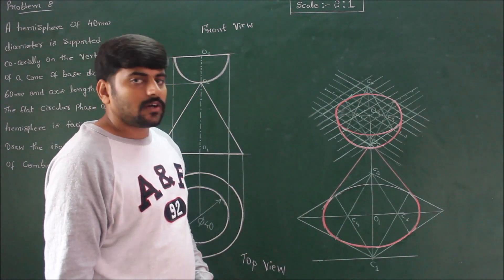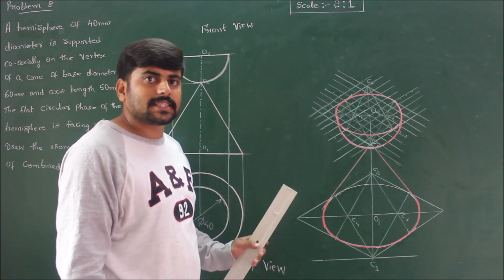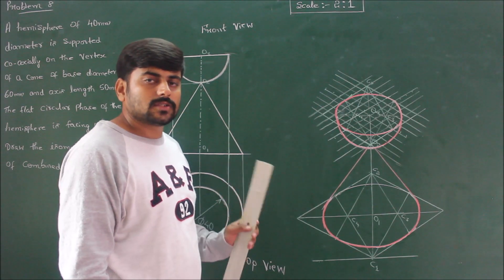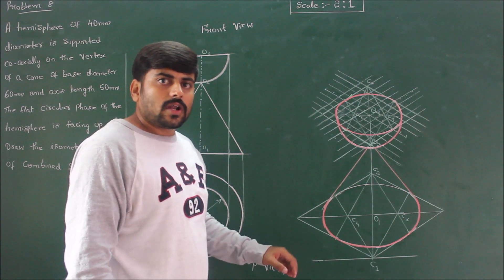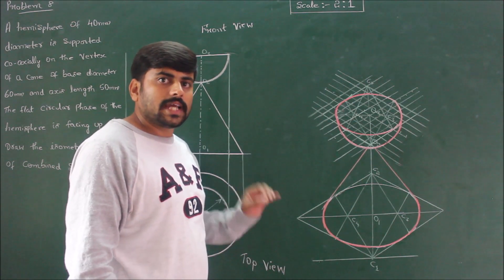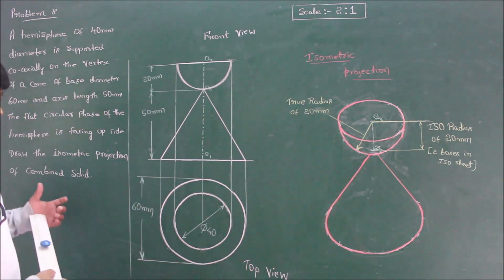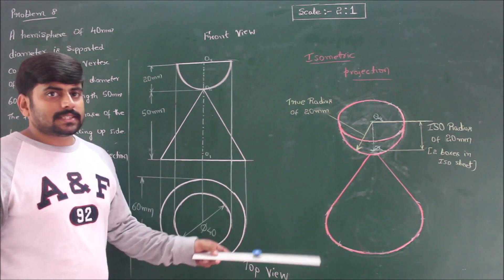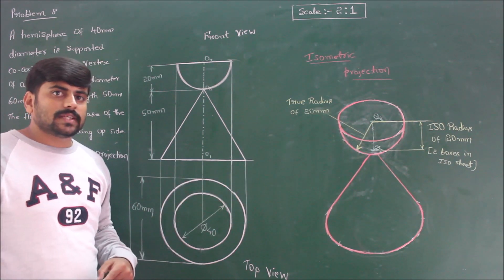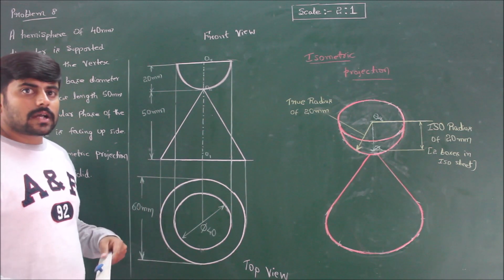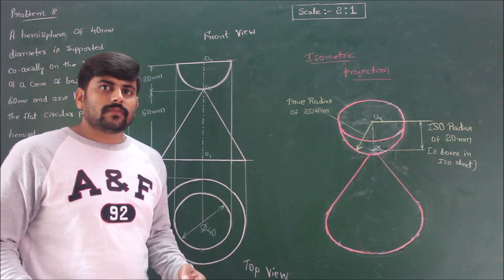This completes the isometric projection of the given combination of solids. In isometric projection, one should not show any construction lines, dimensions, or angles. Erasing all construction lines, the final isometric projection is the result. This is the final view. For reference, I am showing the difference between the iso-radius and the true radius of the hemisphere. The front view, top view, and isometric projection of the combined solid are all shown.